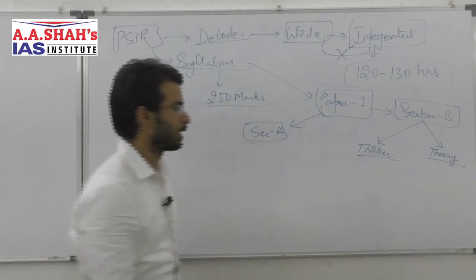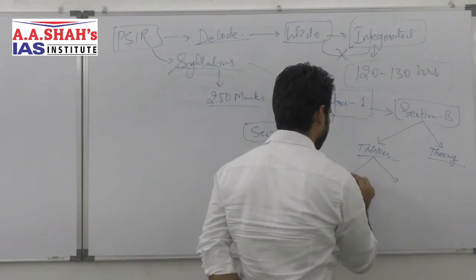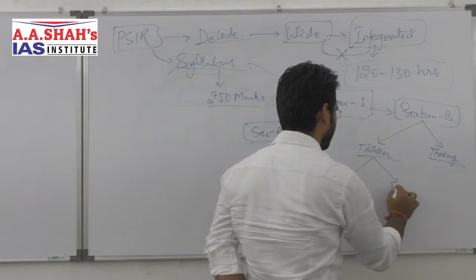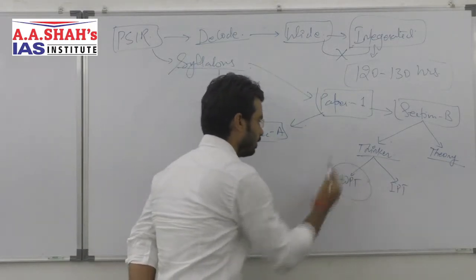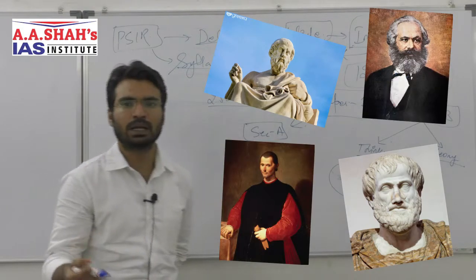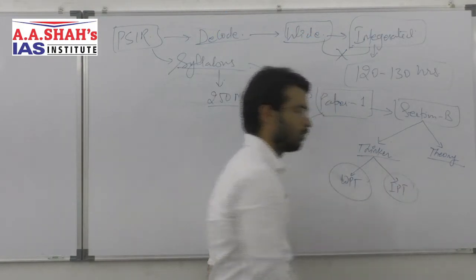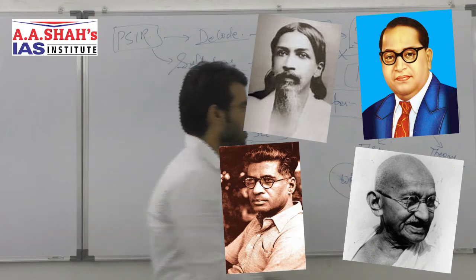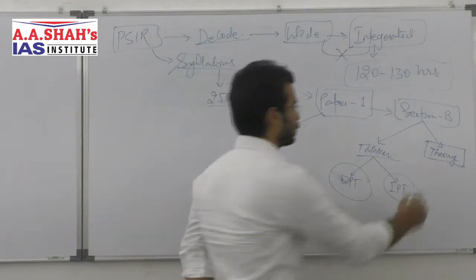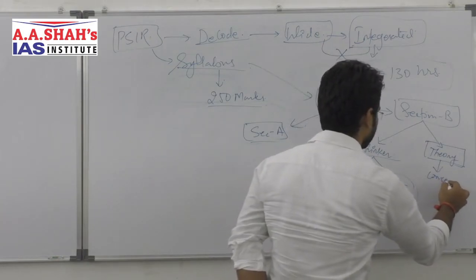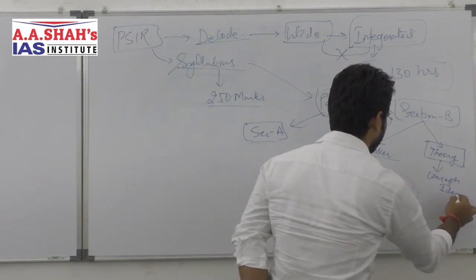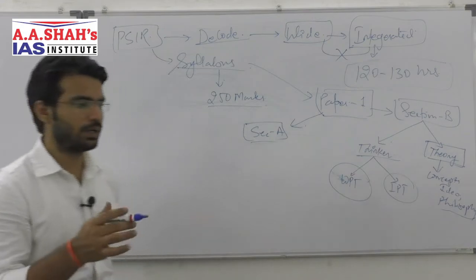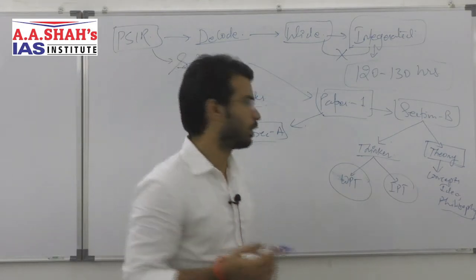Within Thinkers, we can divide further into Western political thinkers — Aristotle, Plato, Karl Marx, Machiavelli — and Indian political thinkers such as Gandhi, Ambedkar, Aurobindo Ghosh, and Roy. In the Theory part, we study concepts, ideas, and philosophy: the idea of justice, freedom, liberty, equality, liberalism, and socialism.